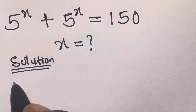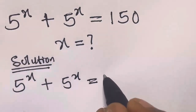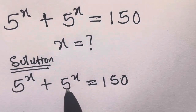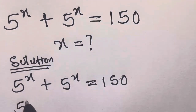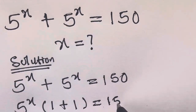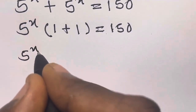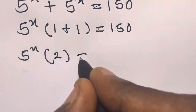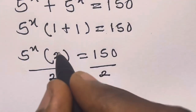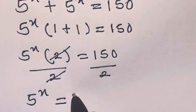So let's solve it together. We have 5 raised to the power x plus 5 raised to the power x equals 150. We can factorize 5 raised to the power x, so what will be left is 1 plus 1. This becomes 5 raised to the power x times 2 equals 150. Dividing both sides by 2, we get 5 raised to the power x equals 75.